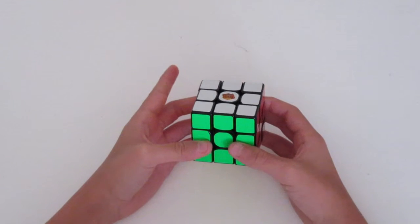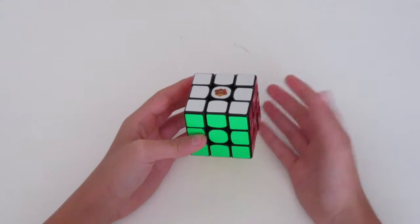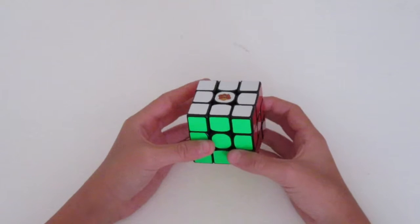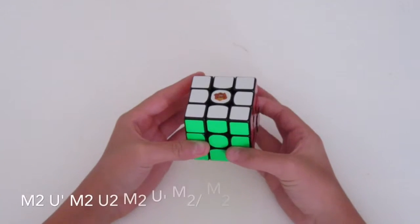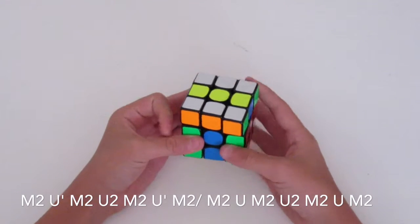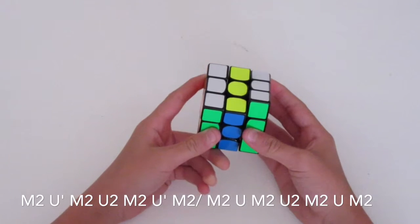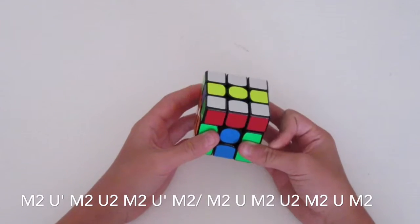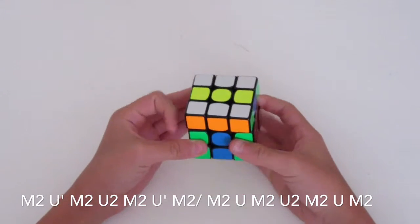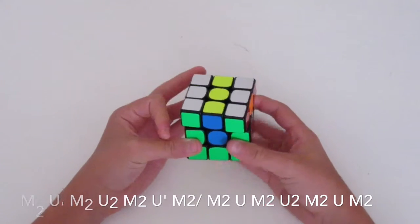Obviously, in my opinion, the easiest one is the H-Perm. There will be the annotations, the algorithm at the bottom for you to follow along. The algorithm for this is M2U', or if you do your M slices with your left hand, then you would do just a U. But I do mine with my right hand, so it's M2U', M2U', and M2U', M2.